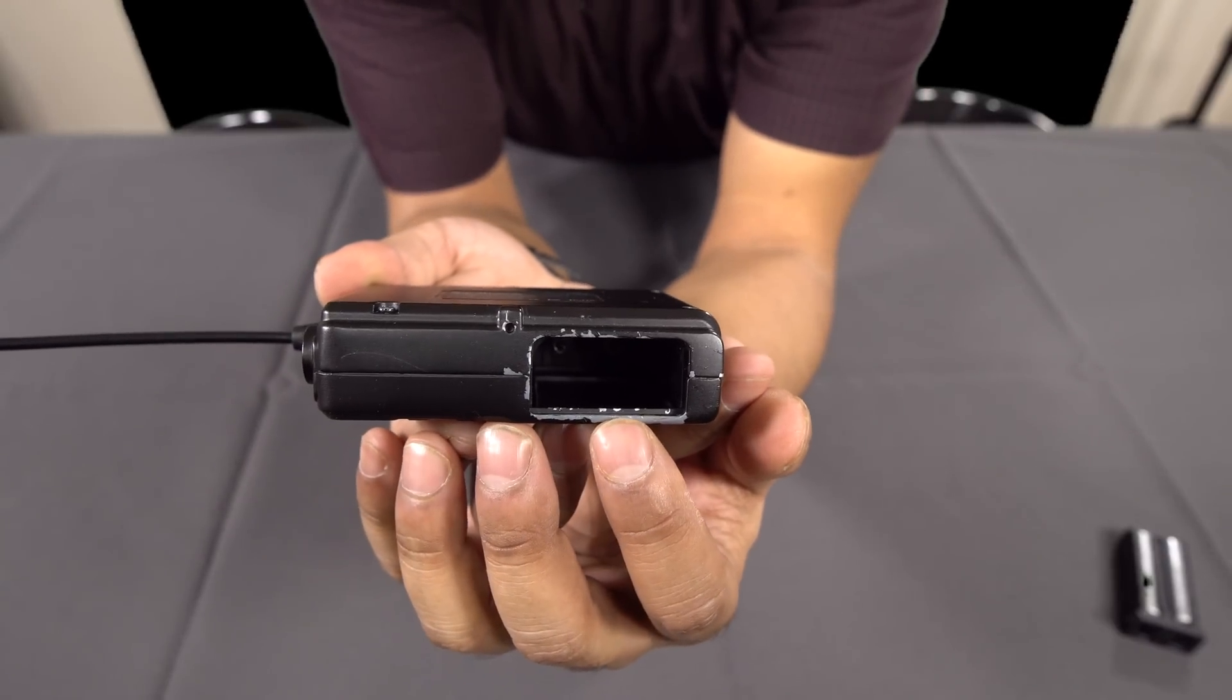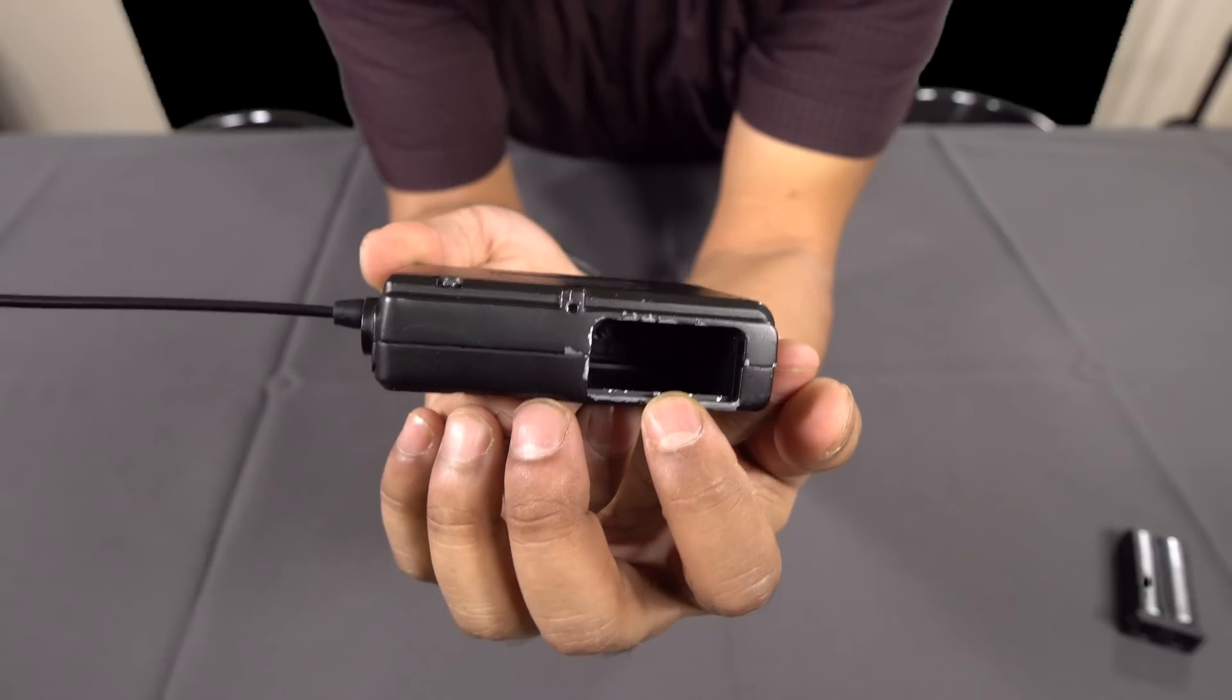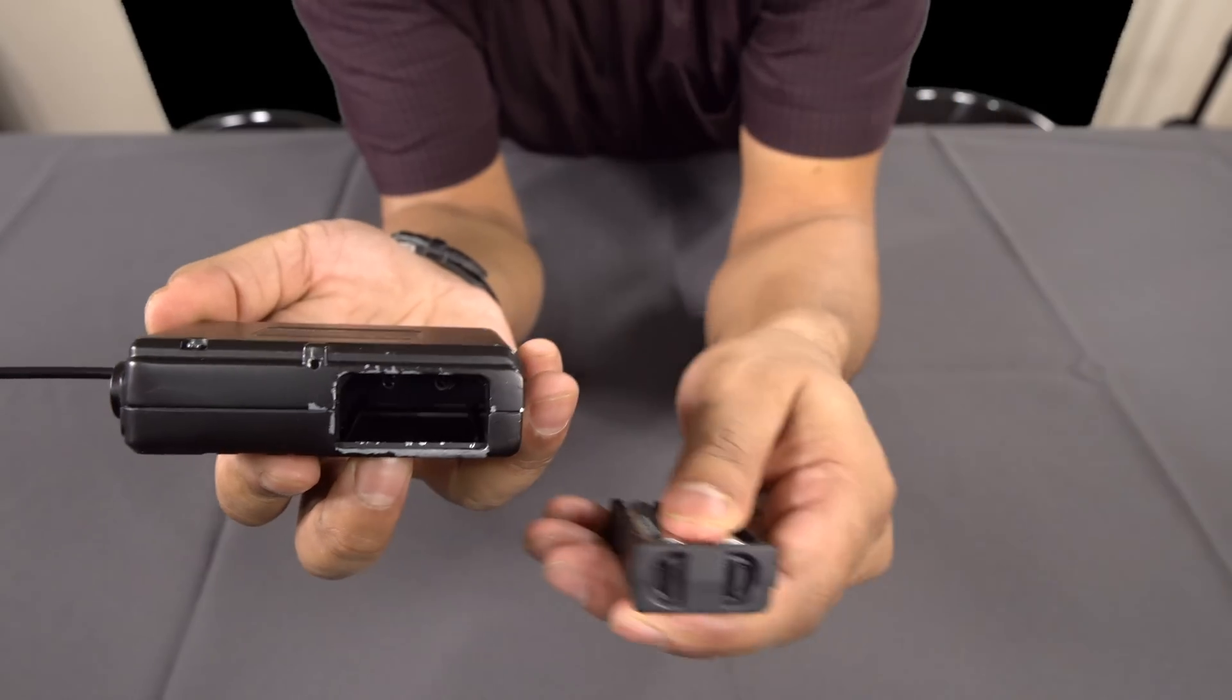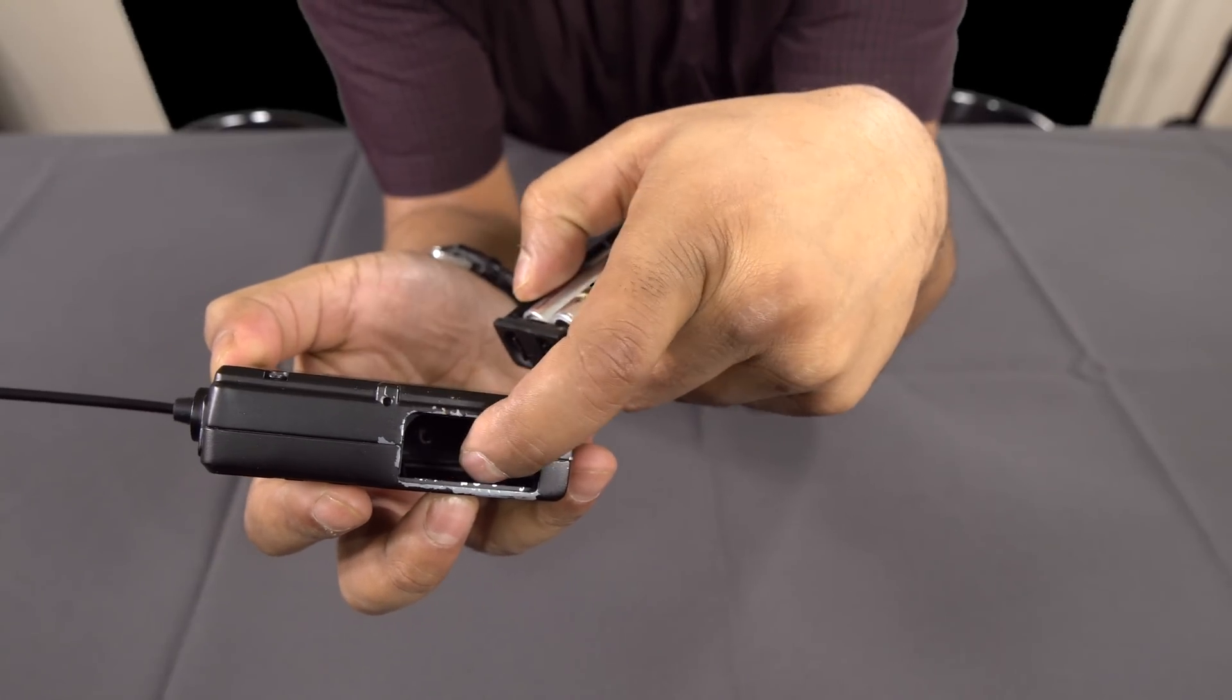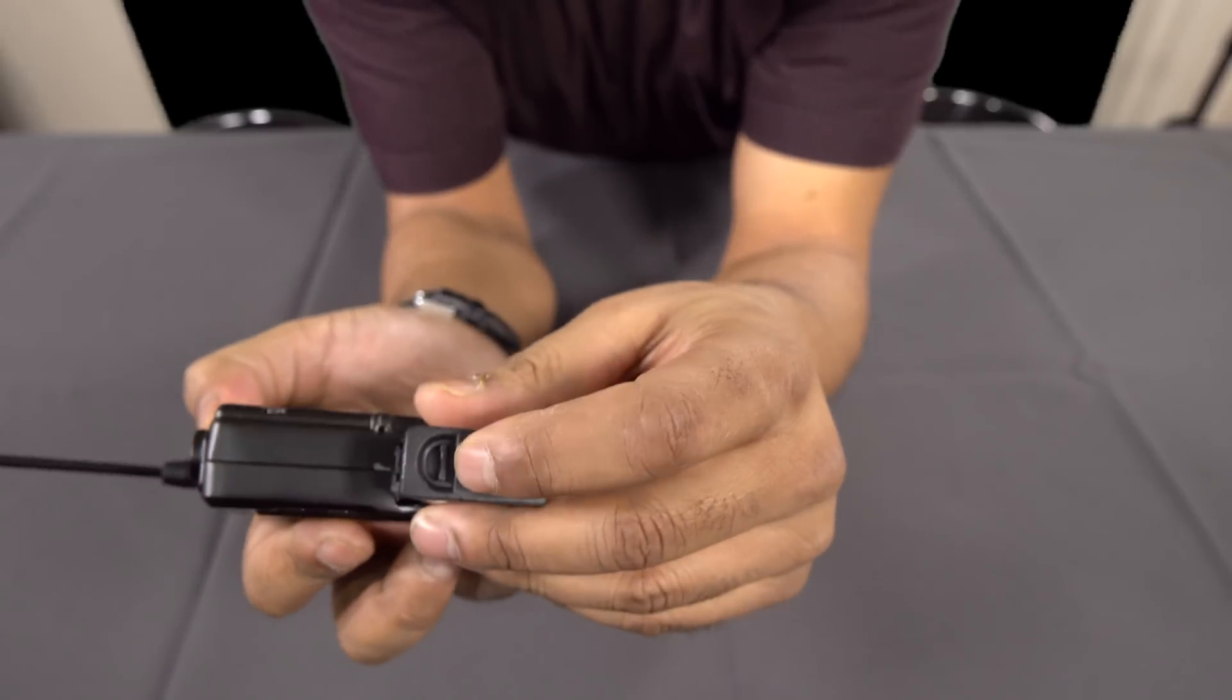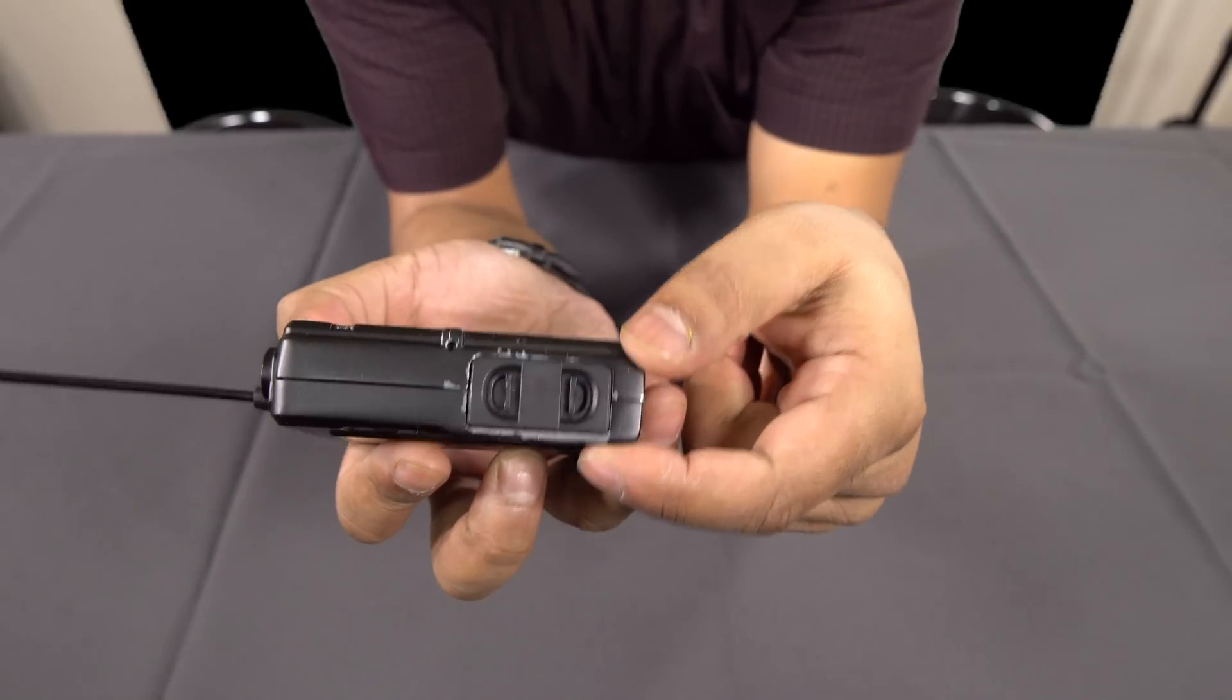Now what happens is, the batteries, when they pop out of place, they get stuck behind that lip, and when you try to open the case, what happens is, let me push these back in, I'll show you. So, you can definitely see there's a little lip down here.